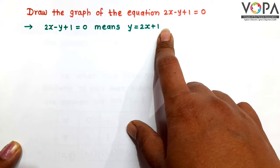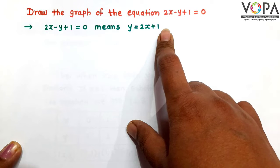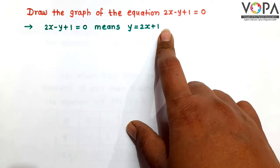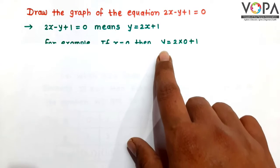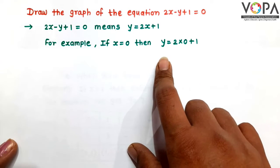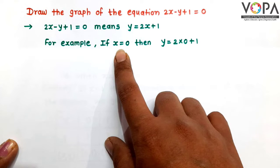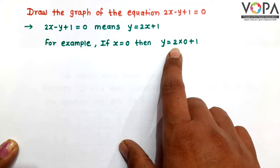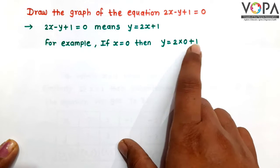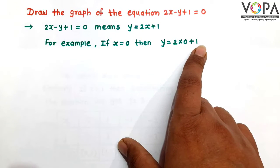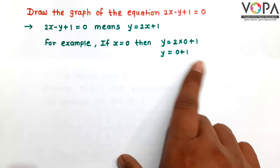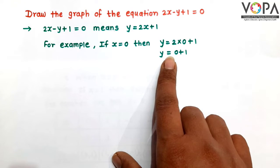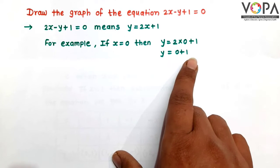Let's assume some values of x and find the corresponding values of y. For example, if x equal to 0, then y is equal to 2 multiplied by 0 plus 1. That is, y is equal to 0 plus 1.